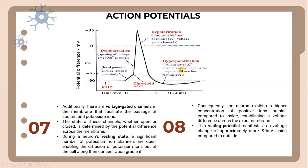There are voltage-gated channels in the membrane that facilitate the passage of sodium and potassium ions. The state of these channels, whether open or closed, is determined by the potential difference across the membrane. During a neuron's resting state — a process called hyperpolarization — voltage-gated potassium channels open after the potential reaches the resting level, enabling the diffusion of potassium ions out of the cell along their concentration gradient.